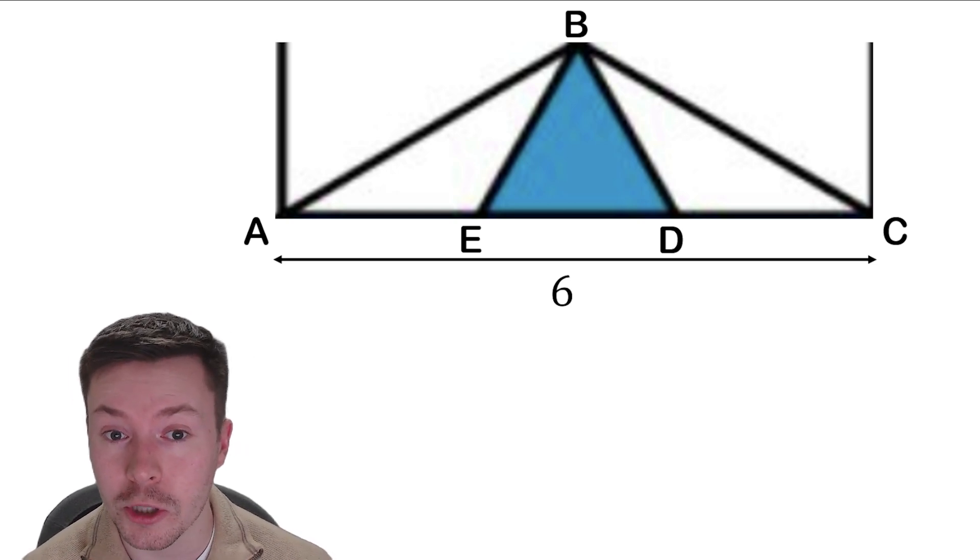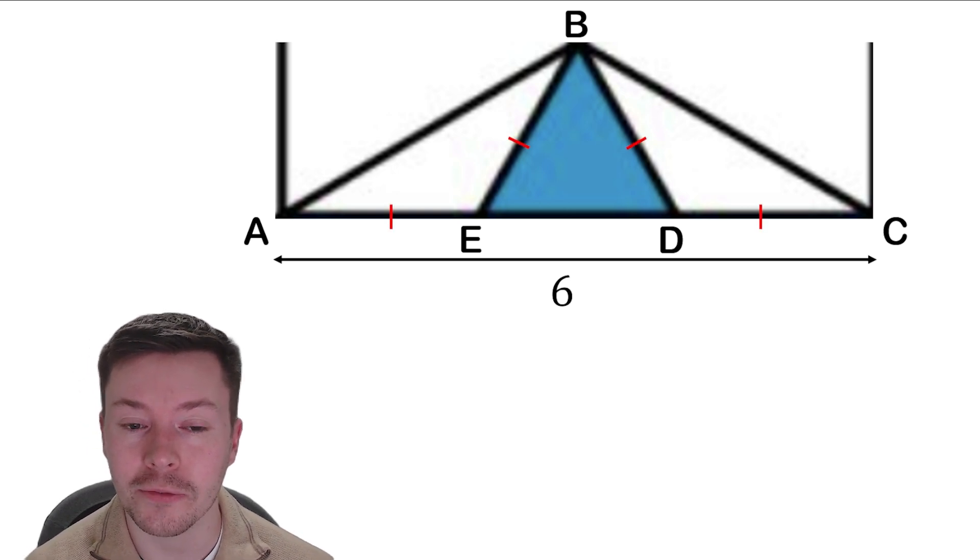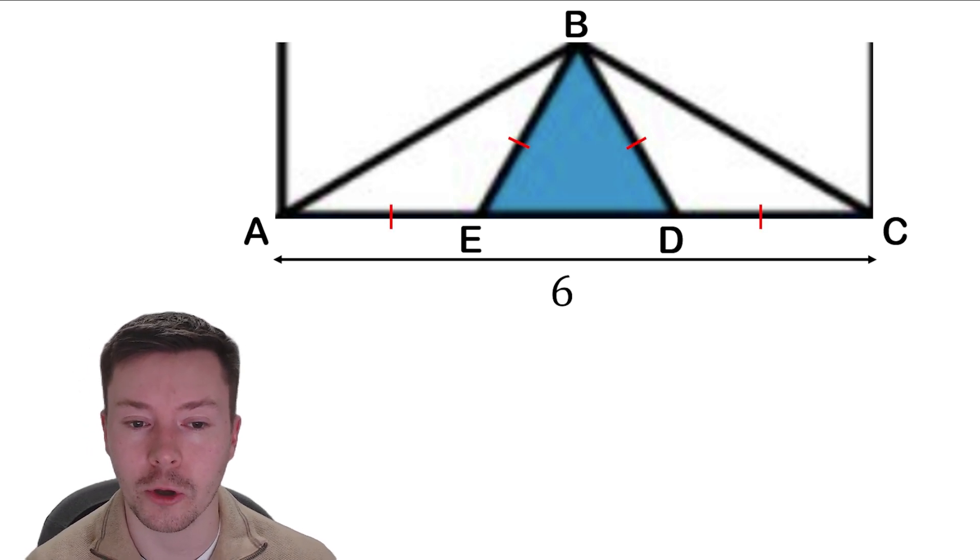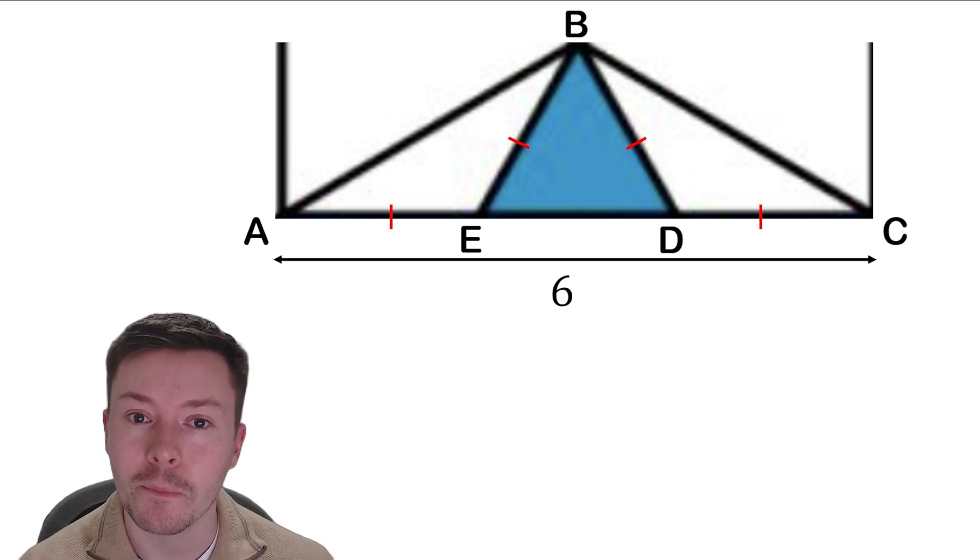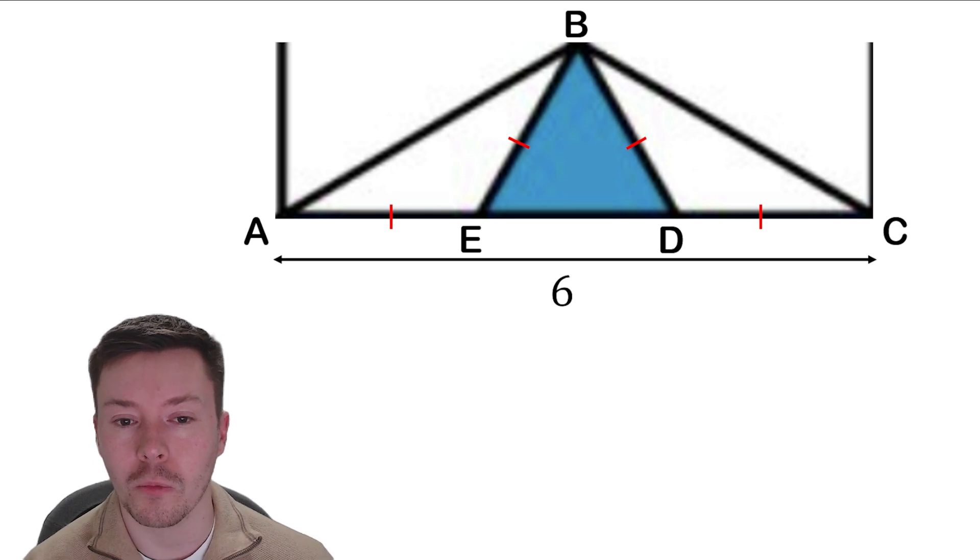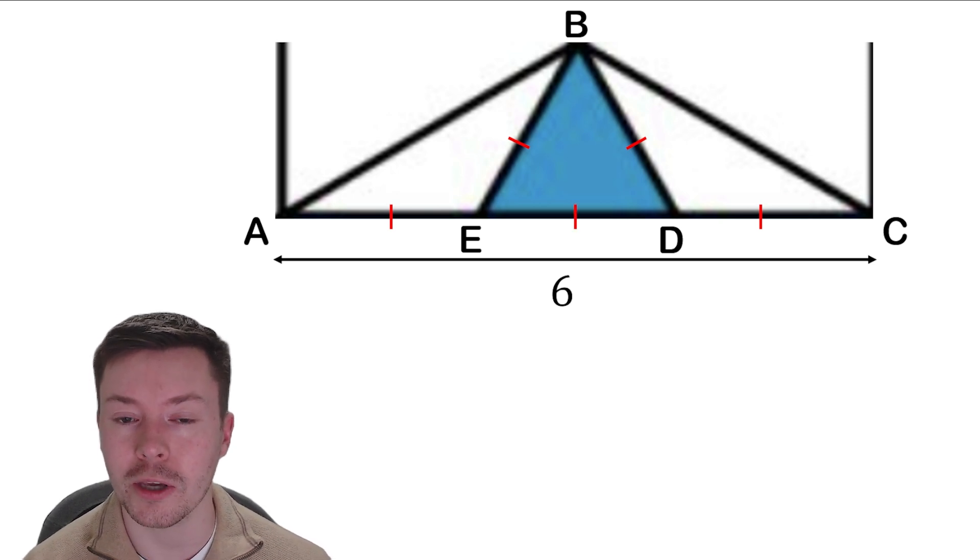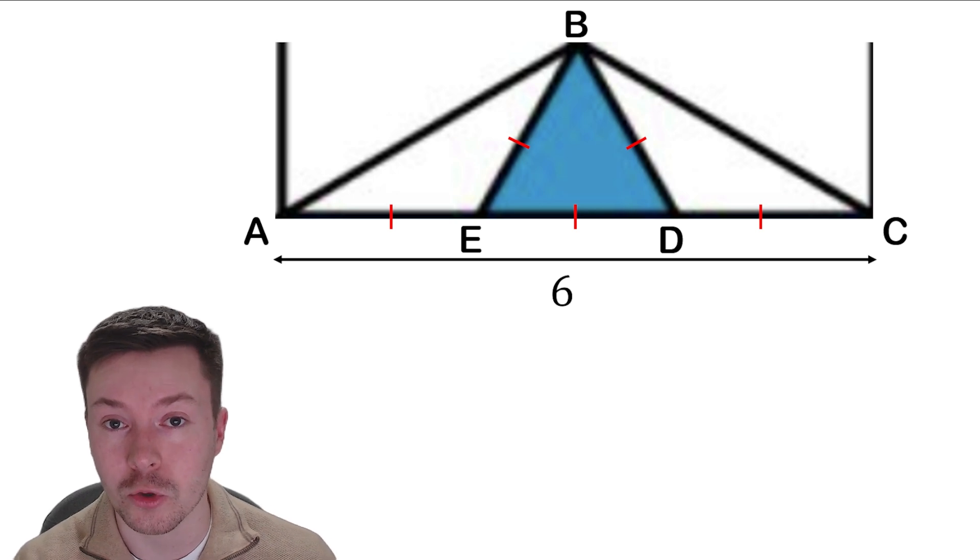What we know as well because of the previous symmetry is that these sides have to be equal. So the left-hand side, those two sides have to be equal and the right-hand side, those two sides have to be equal because of the symmetry that we had with the hexagon. Now what we also know is that this third side of that triangle must be equal because that's an equilateral triangle.